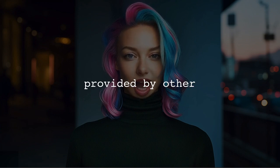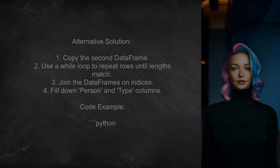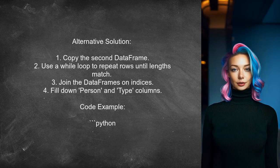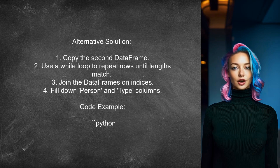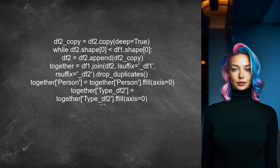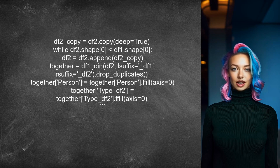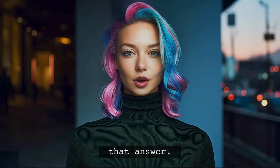Let's look at the answers provided by other users. An alternative approach involves copying the second data frame and using a while loop to repeat its rows until both data frames are the same length. Then, they join the two data frames on their indices and fill down the values for the person and type columns.